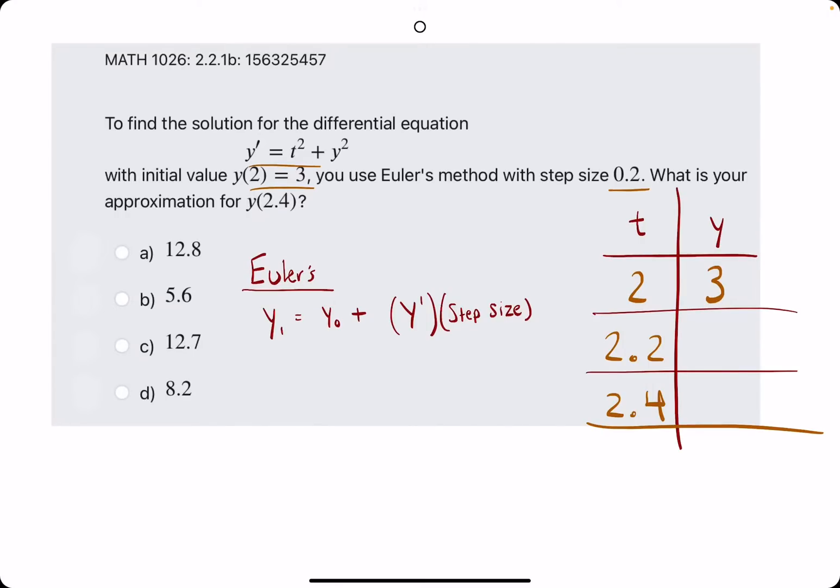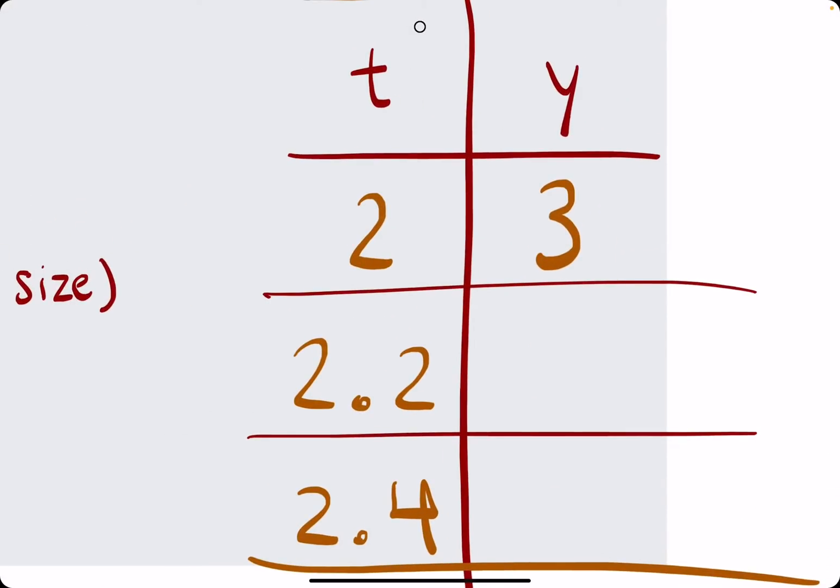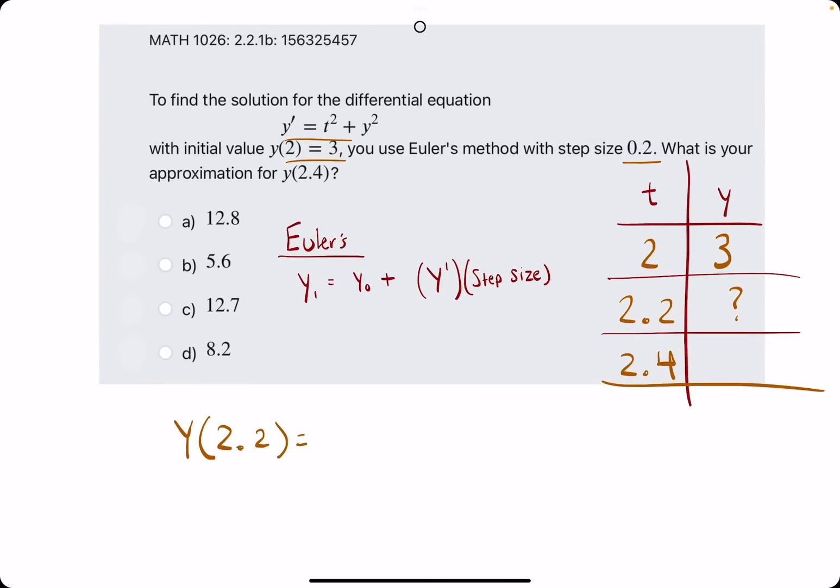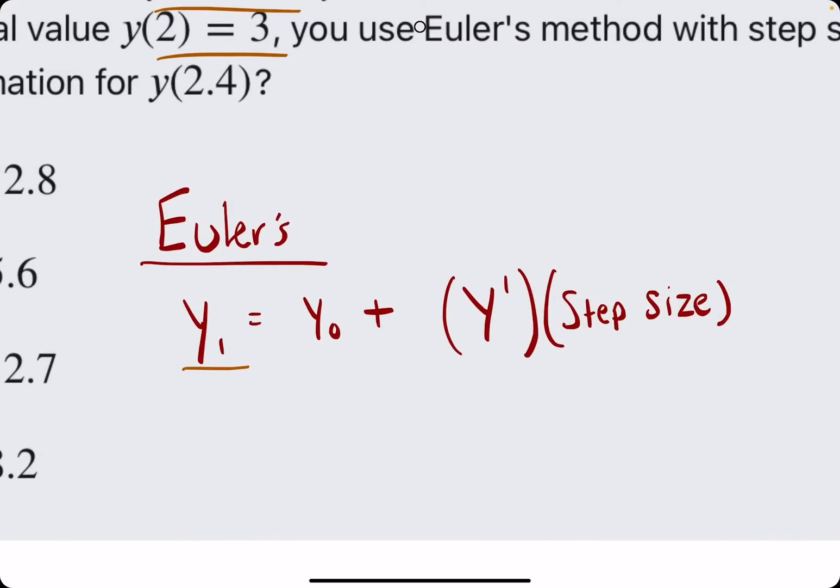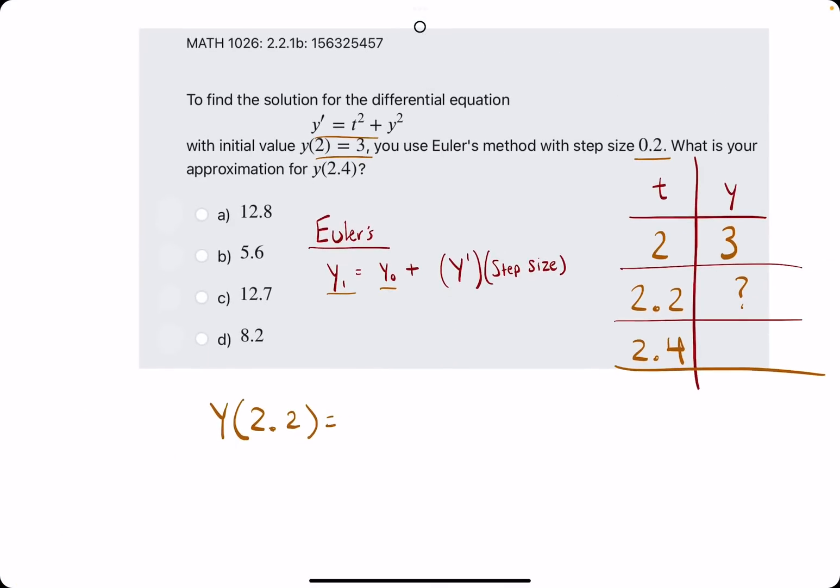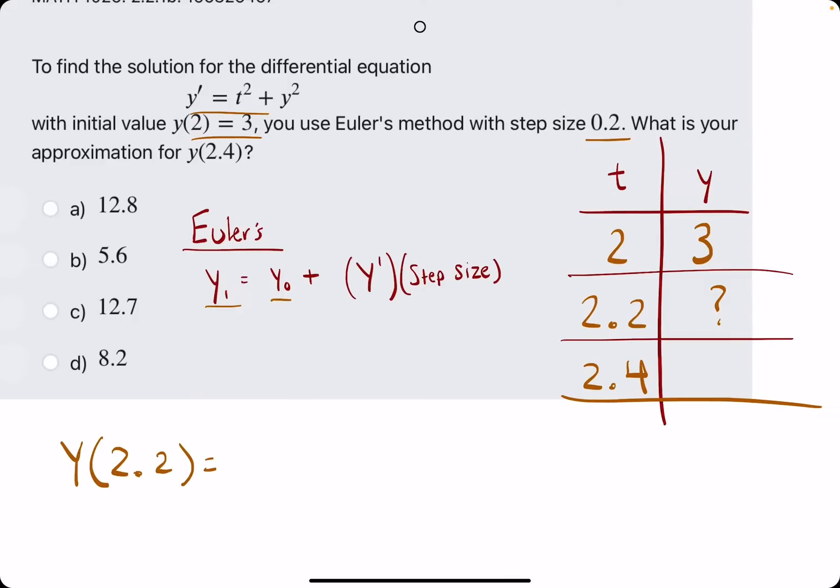So the first step is to use what we know to approximate the y value first for 2.2. So we're finding this y value first, then we'll use that one to find the next one. So y1 is equal to y0, which is the previous y value.